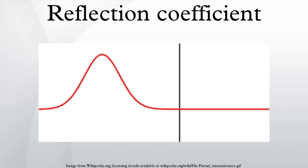In telecommunications, the reflection coefficient is the ratio of the complex amplitude of the reflected wave to that of the incident wave. In particular, at a discontinuity in a transmission line, it is the complex ratio of the electric field strength of the reflected wave to that of the incident wave.